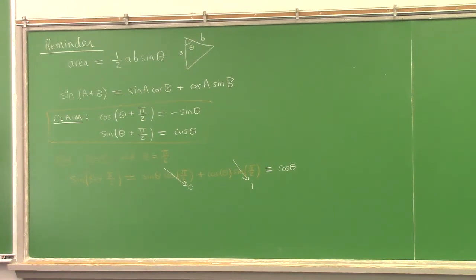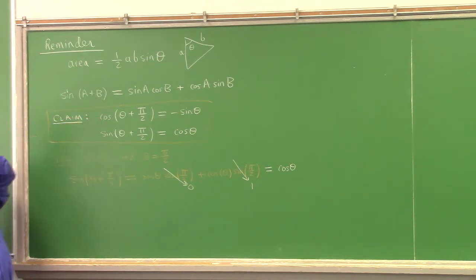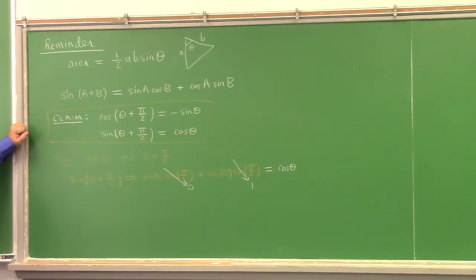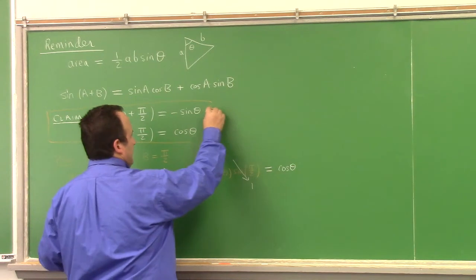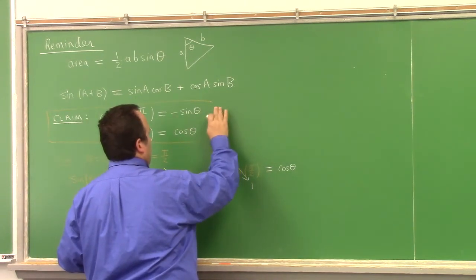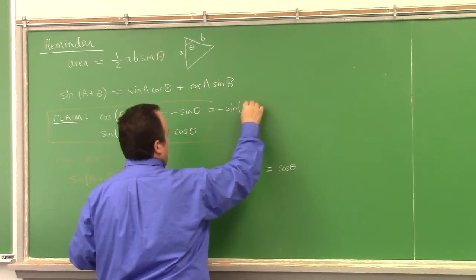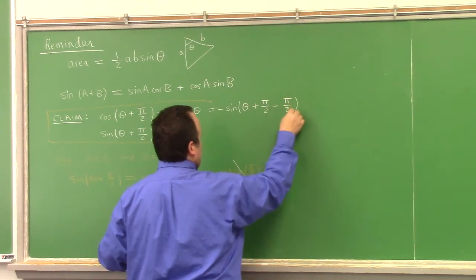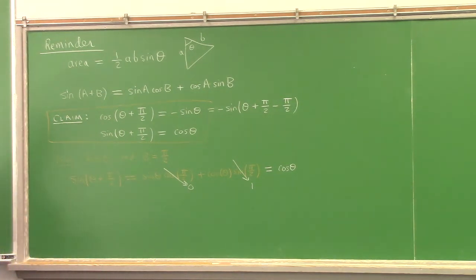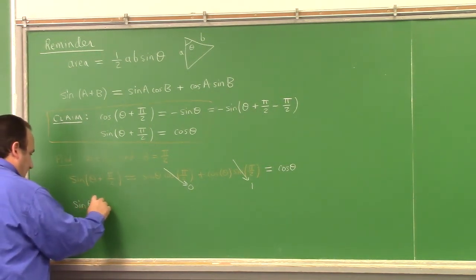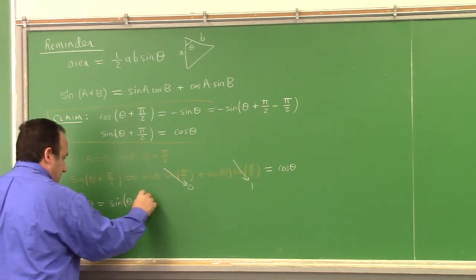We could also take a graphical perspective if wanted, but let me try to do it algebraically. How are we going to prove the first one — cosine of theta plus pi over two? Here's a thought: I could write sine of theta as sine of theta plus pi over two minus pi over two. I'll set the minus aside for just a second and come back to it.